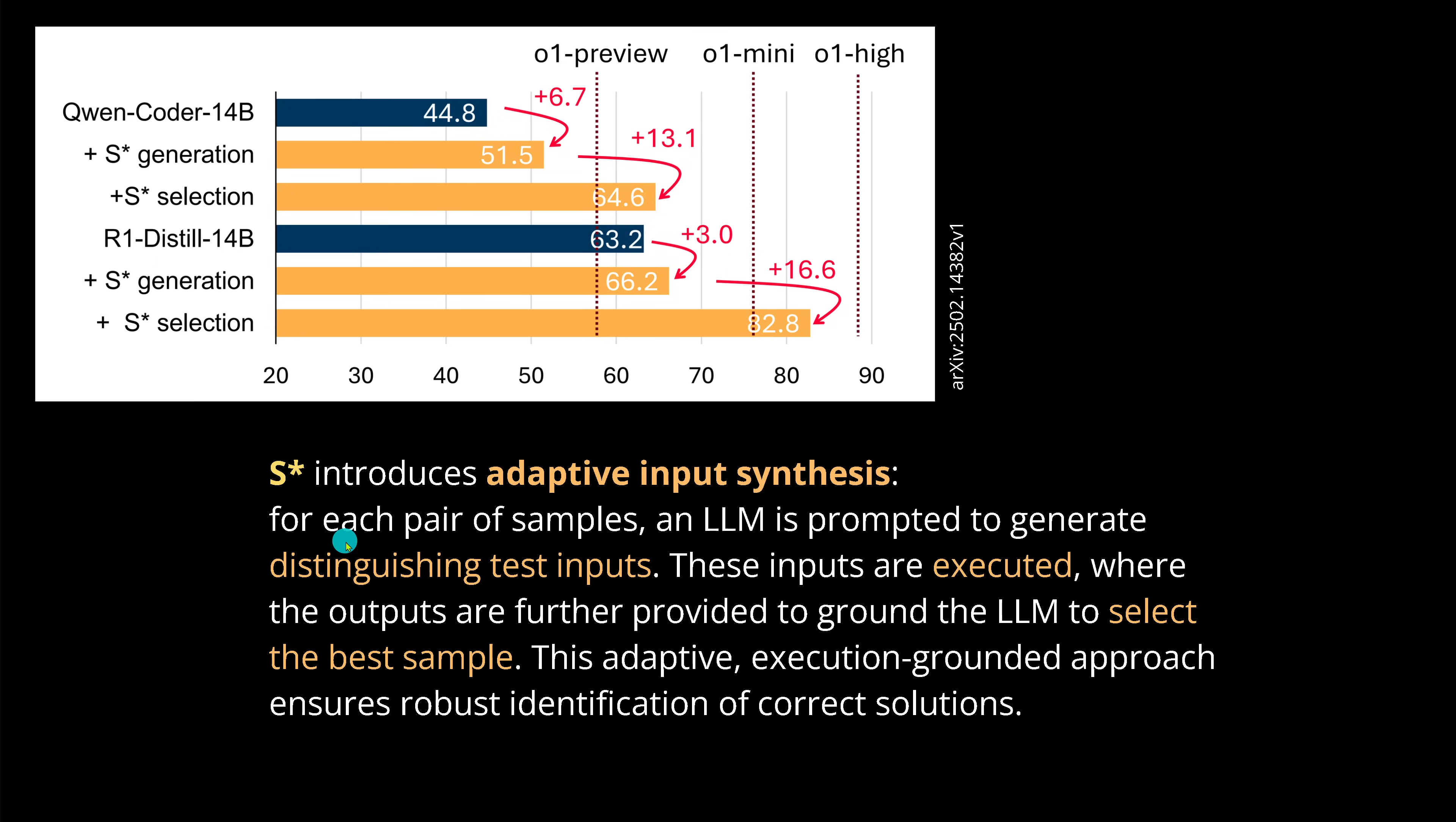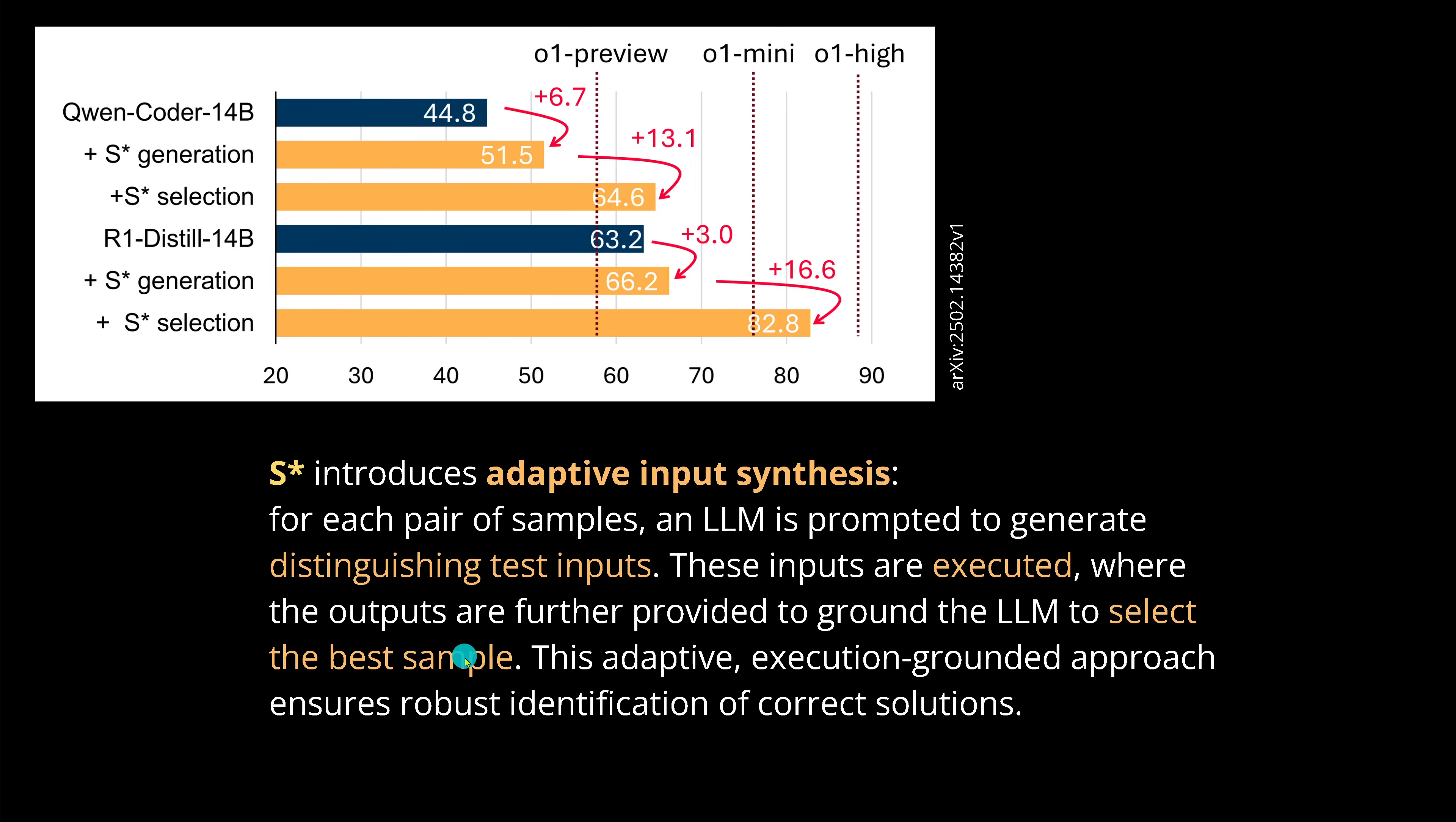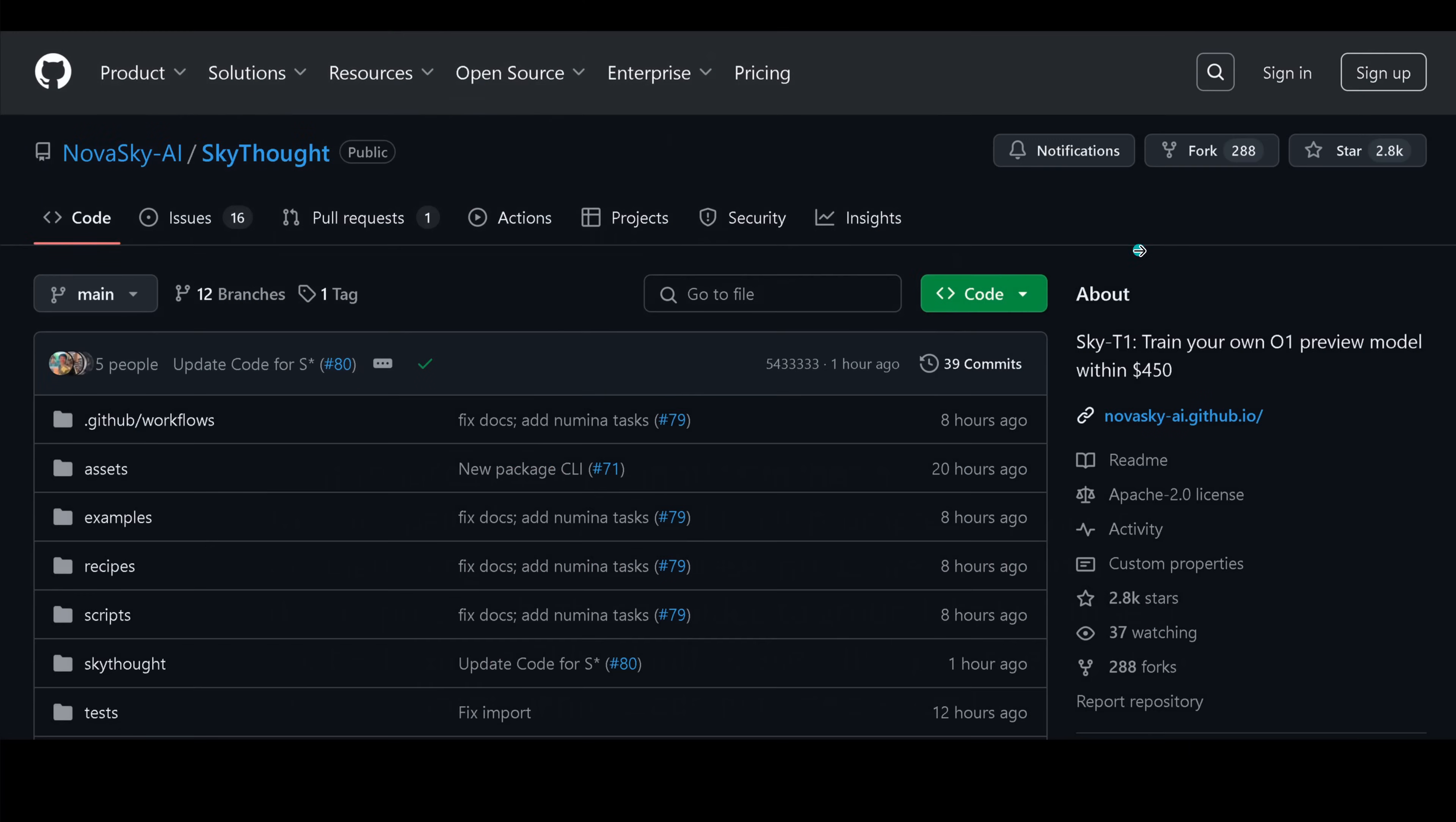For each pair of samples, an LLM is prompted to generate distinguishing test inputs. These inputs are executed in Python where the outputs are provided to ground the LLM to select the best samples. This adaptive execution grounded approach with code ensures a robust identification of the correct solution. You see, this is interestingly for code a really important step.